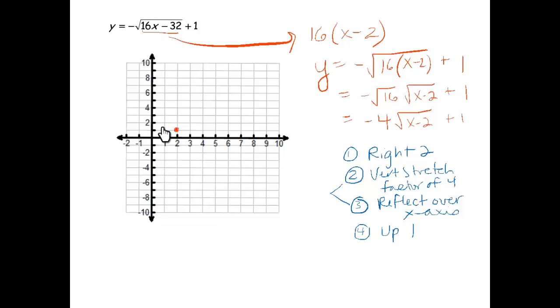Next point was at 1, 1, right 2, 1, 2, vertical stretch, and the reflection. So I'm going to take this y value at 1, and multiply by negative 4. So I'm at negative 4, and move up 1. So now I'm at 3, negative 3.